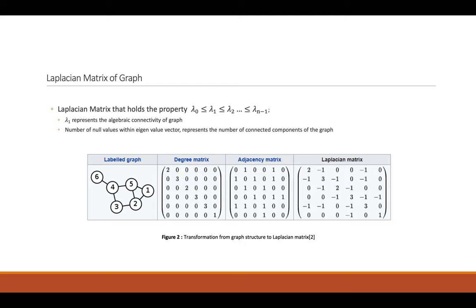So let's look at the concepts of our paper and start with Laplacian matrix of graph. Laplacian matrix holds the property lambda 0 ≤ lambda 1 ≤ lambda 2 and so on. Lambda 1 represents the algebraic connectivity of the graph and number of null values with an eigenvalue vector represent the number of connected components of the graph. And now you can see the Laplacian graph.